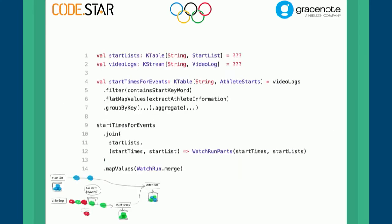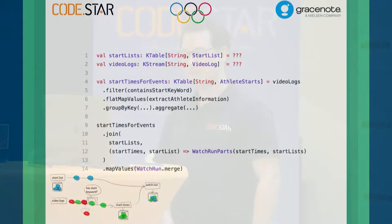The code doesn't look that different — maybe that's one of the powers of Kafka Streams. We have a KTable of start lists — we're aggregating over all these start lists. We also have the video logs, which is still a stream. We filter these events to look for the start keyword, and once we find one, we extract the relevant information for an athlete. Again, group by that, aggregate, so we get a KTable of athlete start events. Given that KTable of start times and start lists, we join those two tables together. Once there's an update on either the start lists or one of the video logs, we output a new object — a watch run message, as we've been calling it.